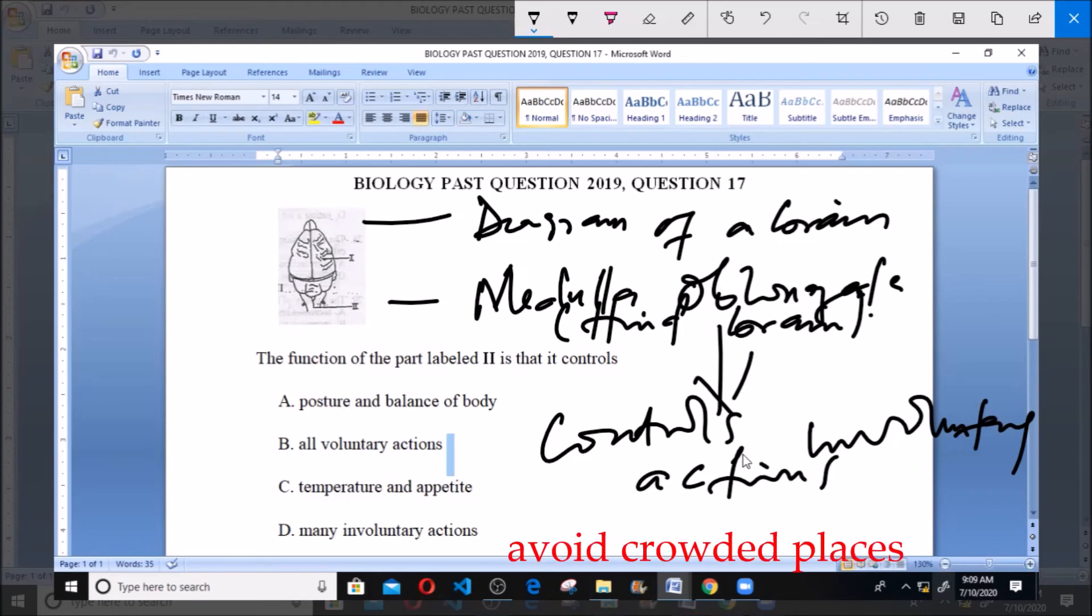So what the medulla oblongata does is that it controls involuntary actions, all involuntary or many involuntary actions. The function of the part labelled II will be option D to be the correct answer to this particular question.